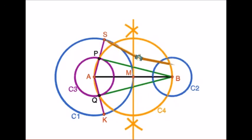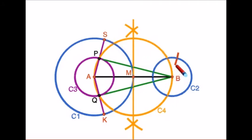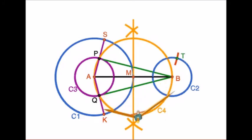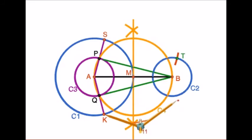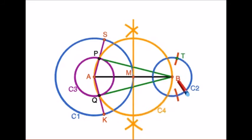With radius equal to PB and center S, draw an arc which cuts circle C2 — name this point as T. Similarly, with radius QB and center K, cut circle C2 — name this point as L.